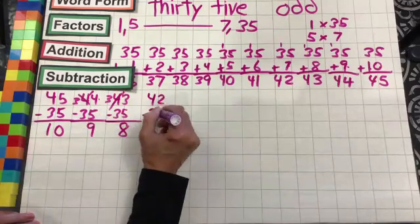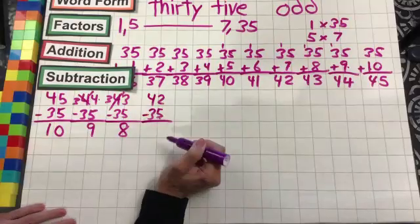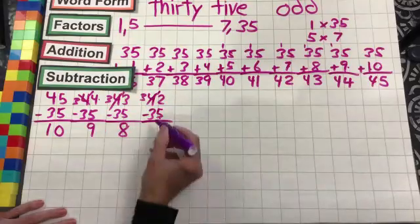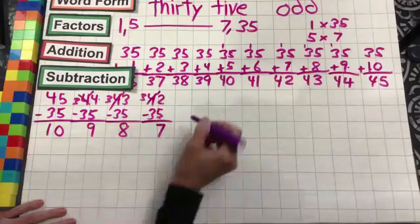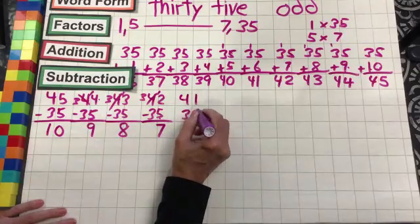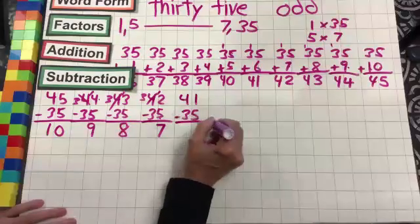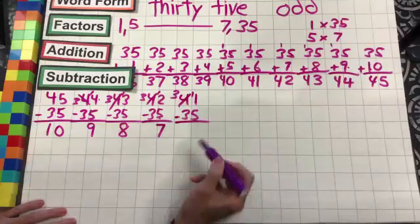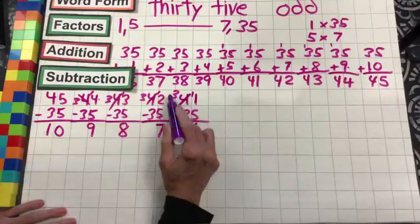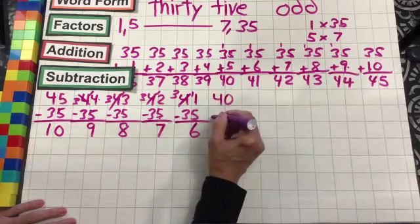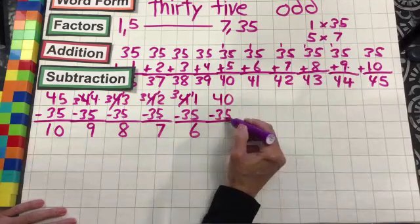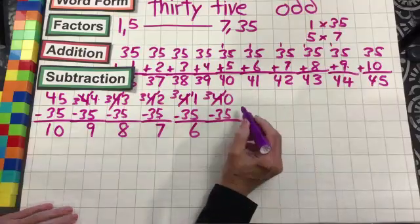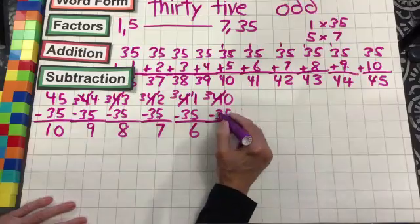42 minus 35: five from two cannot do, borrow from the four making it three, and 12 minus five is seven, three minus three is nothing. 41 minus 35: five from one cannot do, borrow from the four leaving three, making that 11 minus five is six, three minus three is nothing. 40 minus 35: five from zero cannot do, borrow from the four leaving three, making that 10 minus five is five, three minus three is nothing.